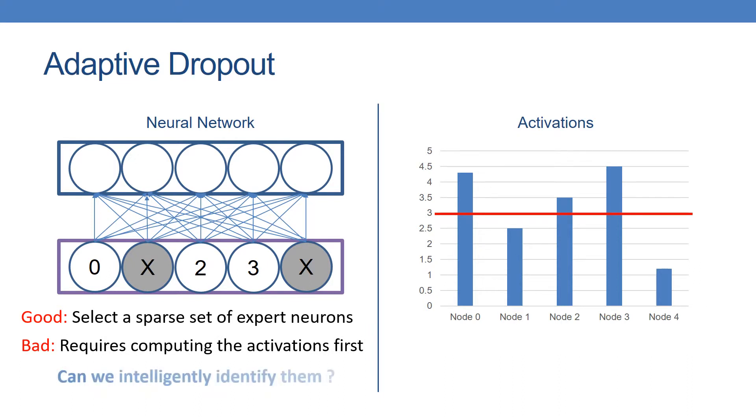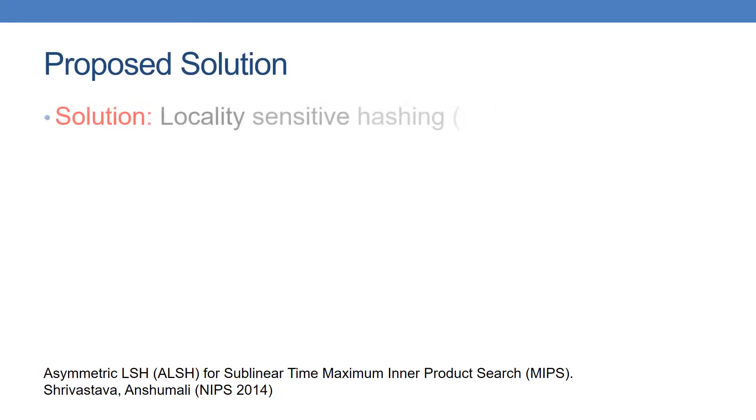The question is, can we intelligently identify the sparse set of expert neurons efficiently? The answer is yes. We can use locality-sensitive hashing to sample the expert neurons in sub-linear time.